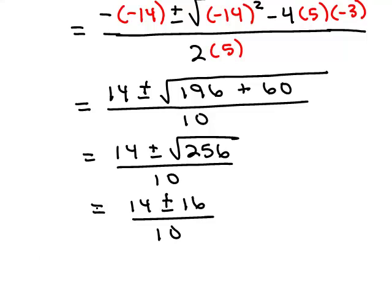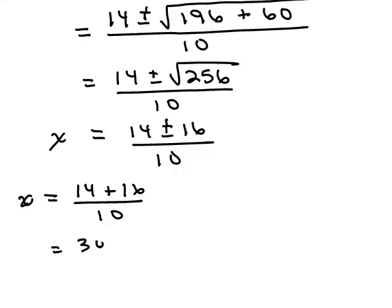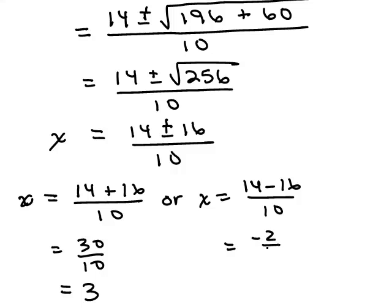Then we write the square root of 256 is 16, all over 10. So then I could do x = (14 + 16)/10, and we could simplify that, 30/10 = 3, or x = (14 - 16)/10, which is -2/10 or negative 1 fifth.